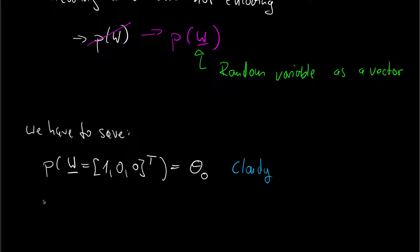Then we have the probability of the weather vector being zero, one, zero, transpose, which will be theta one. And that is the probability of rainy weather.